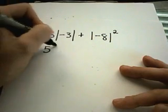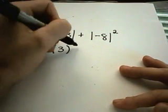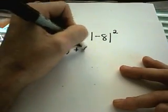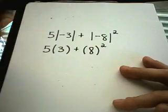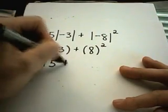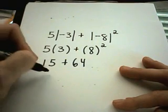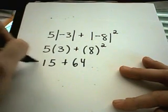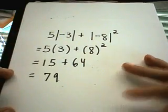So the absolute value of negative 3, that's going to turn into just positive 3. Plus the absolute value of negative 8 is just positive 8. And we still have to square that. 5 times 3 is 15. 8 times 8 is 64. If we add these, we're going to get 79. And that's our solution.